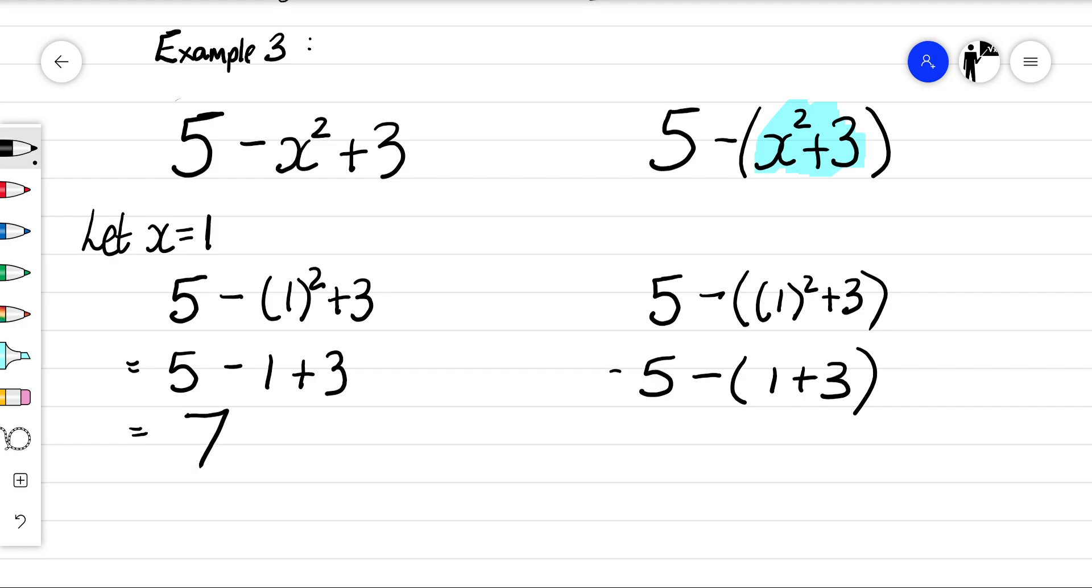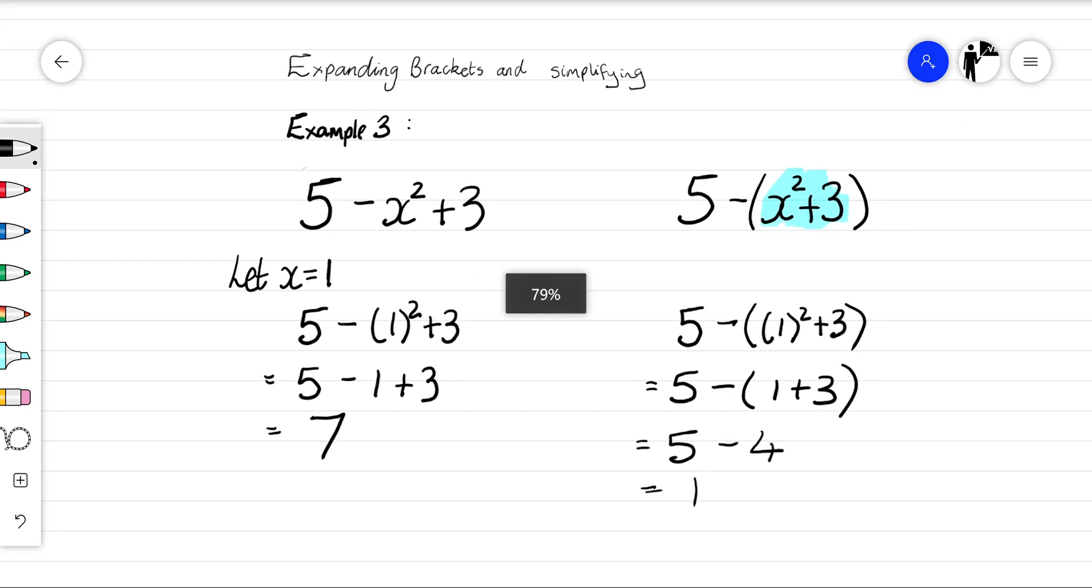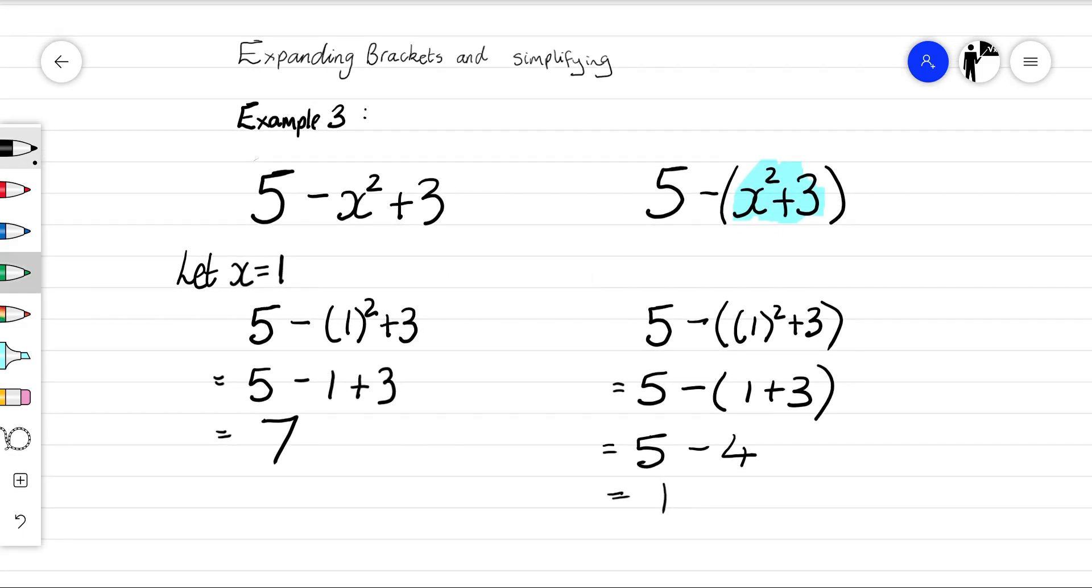But in this calculation, we need to evaluate the brackets first. So we're doing 5 subtract 4, which is 1. The main idea here is that I want you to realize that these are different. This here is very different to this here. The bracket, the inclusion of the bracket is important.